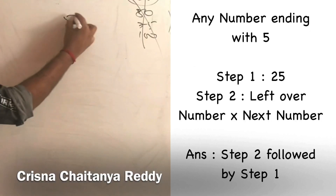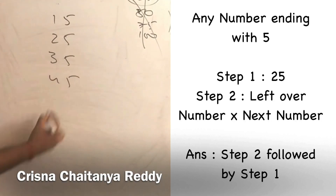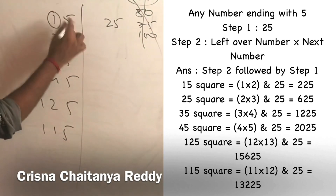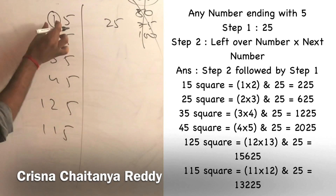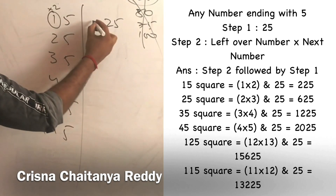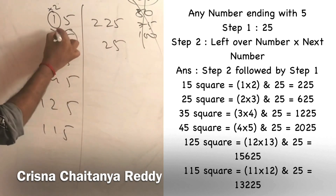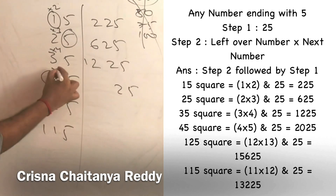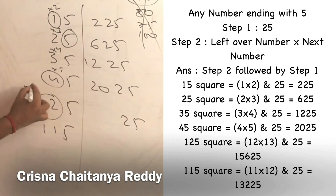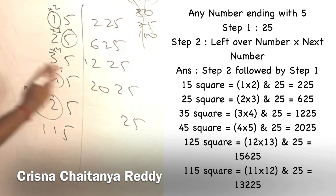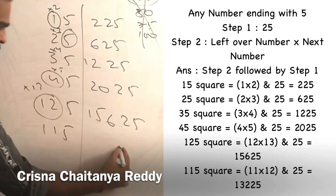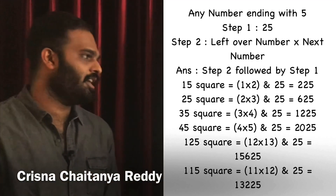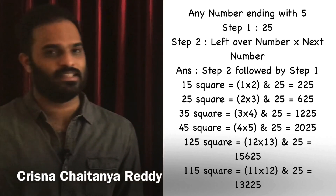For any number ending with 5 - 15, 25, 35, 45, 125, 115, etc. - the answer always ends with 25. Then for the remaining digits: multiply the number before 5 by its next consecutive number. So 1×2=2, answer 225. 2×3=6, answer 625. 3×4=12, answer 1225. 4×5=20, answer 2025. For 125 squared: 12×13=156, answer 15625. For 115 squared: 11×12=132, answer 13225.